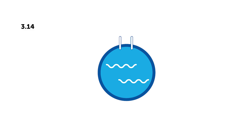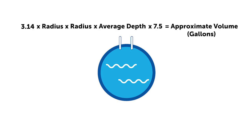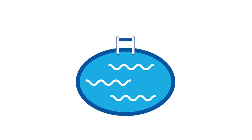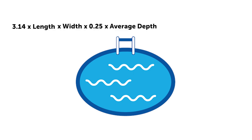For circular pools and hot tubs, you multiply pi (3.14) times the radius times the radius again, times your average depth, then by 7.5. If your pool is oval, you'll multiply pi (3.14) times the length by the width of your pool times 0.25, times your average depth, then multiply that by 7.5, and that'll give you your approximate volume in gallons.